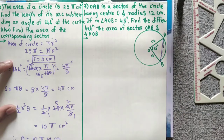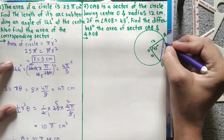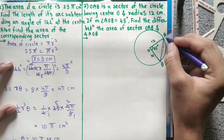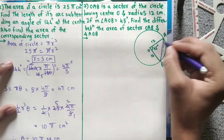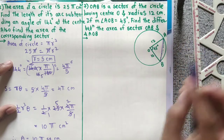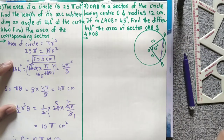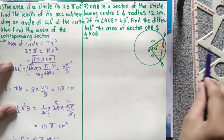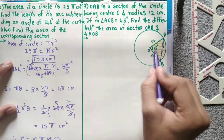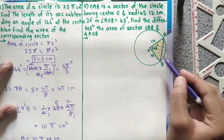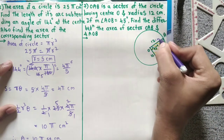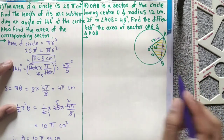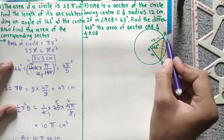Now question number 7: OAB is a sector of a circle having center O, radius 12 cm, and major angle AOB of 45 degrees. Find the difference between the area of sector OAB and the area of triangle AOB.